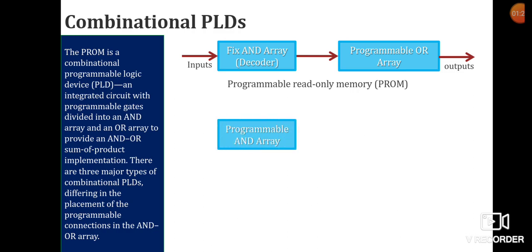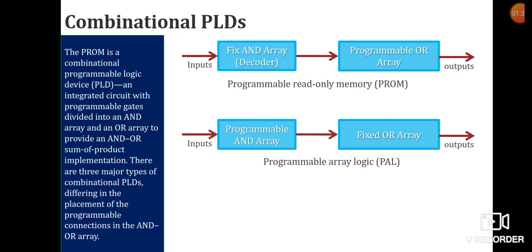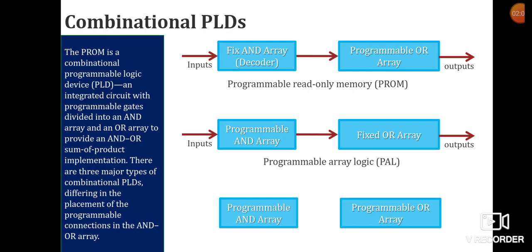What are the other kinds? If you have a programmable AND array and fixed OR array, then it will be considered as PAL — programmable array logic. In programmable array logic, the AND array will be programmable and the OR array will be fixed, so you can say it is just the reverse of PROM. Next, if you have a programmable AND array and programmable OR array, that kind of PLD is known as PLA — programmable logic array.